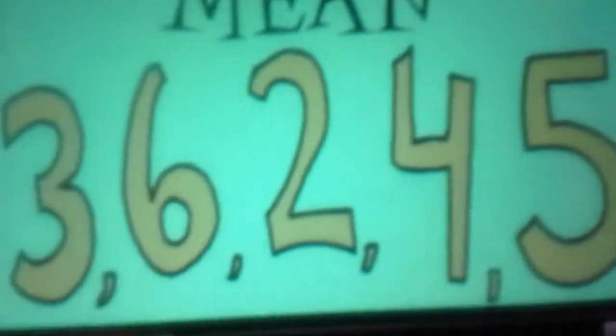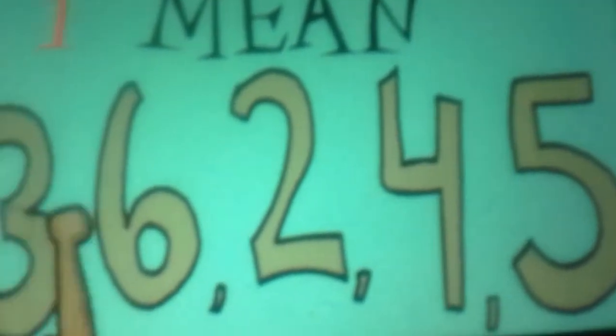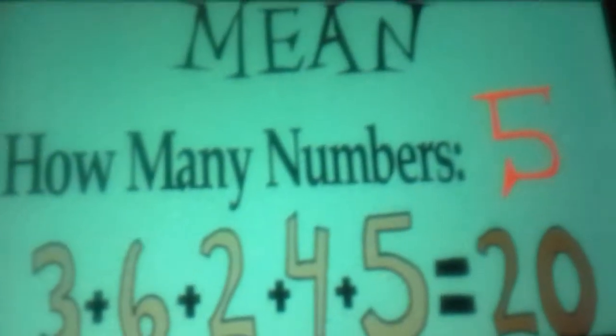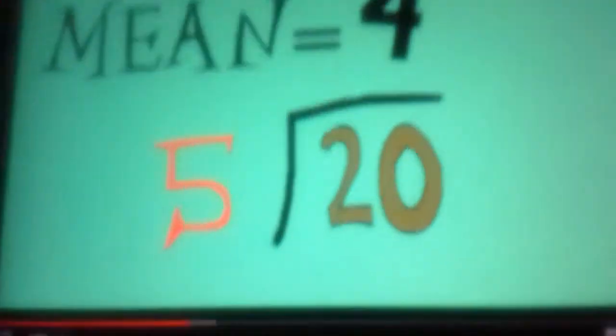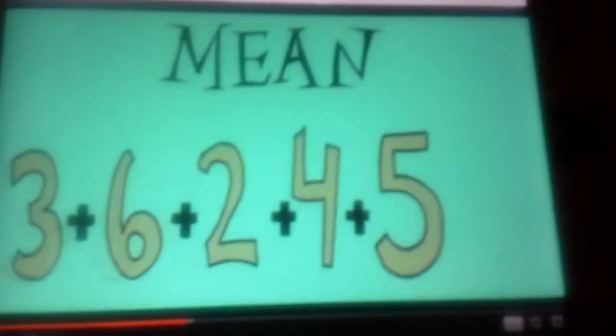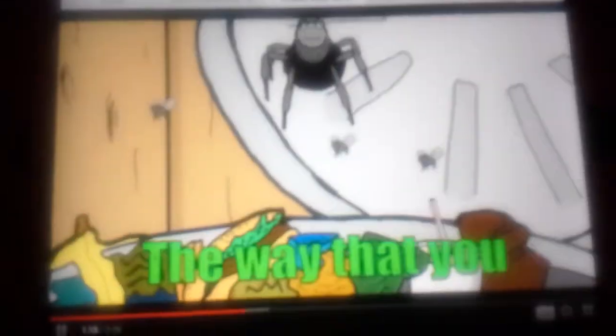What do you got? I'm the Mean Toad. To get the mean, take a set of numbers or data and add them up. Then you count how many numbers you got. After that, you divide the sum of the numbers by how many there are. That is the Mean, or sometimes called Average. So basically, you add and divide — that's the way that you get the mean, you add and divide.